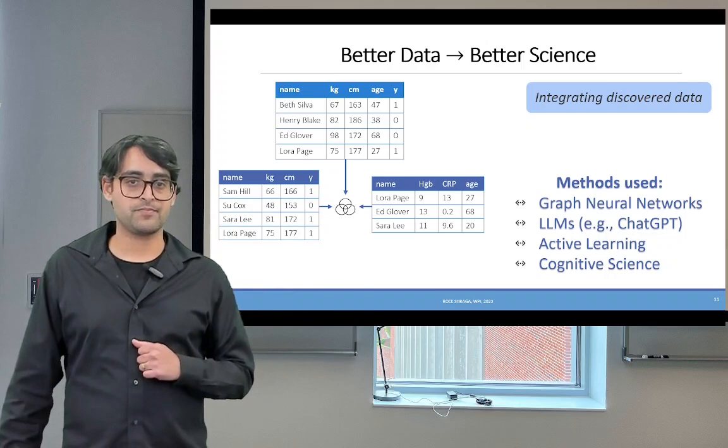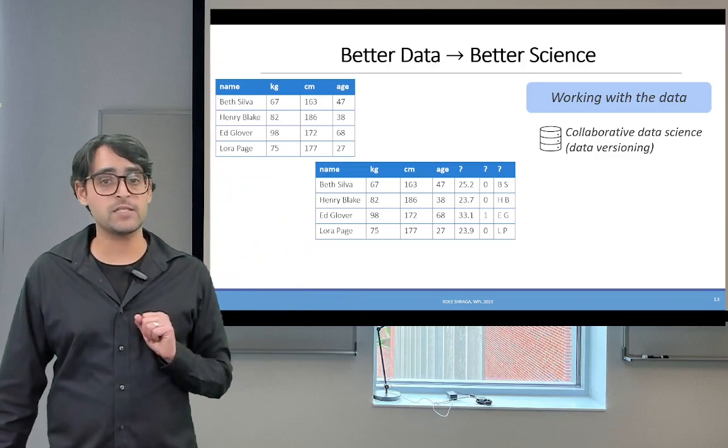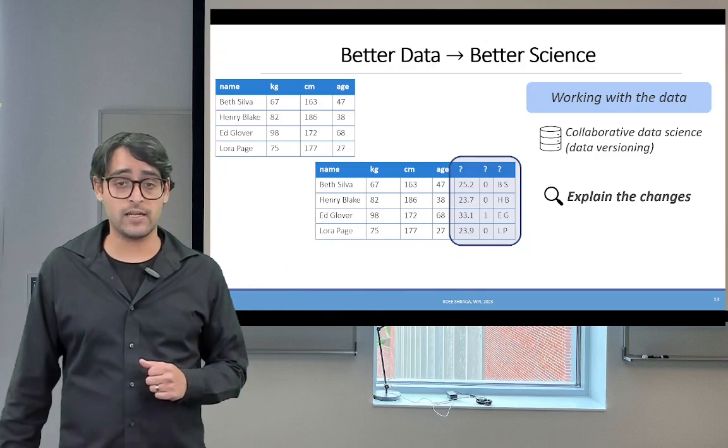Another interesting research that we have is looking at how people work with the data. Specifically here, we look at collaborative data sets. Assume that we have the same data set as before that was used by the scientists, and they created three new columns. While another set of scientists look at this data set, they don't know what happened to the data. Specifically, we see three more columns.